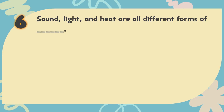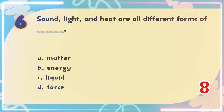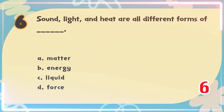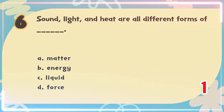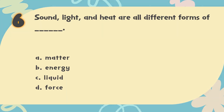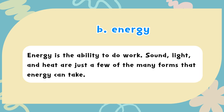Number 6. Sound, light and heat are all different forms of blank. The choices are: A. Matter, B. Energy, C. Liquid, D. Force. The correct answer is B. Energy. Energy is the ability to do work — sound, light and heat are just a few of the many forms that energy can take.